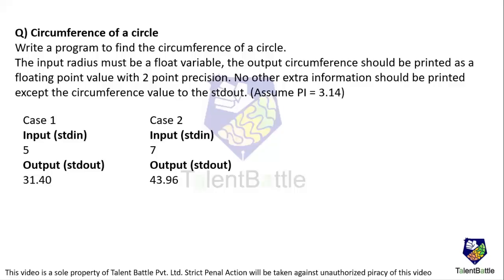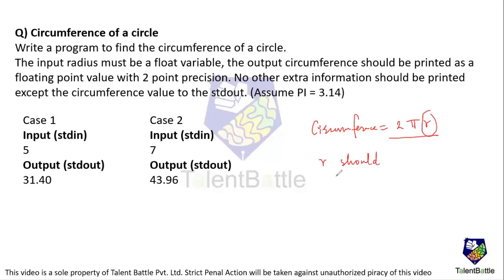The next question is about the circumference of a circle. We need to write a program to find the circumference of a circle. The formula is: circumference = 2 × π × r. One criterion is that the input radius must be a float variable, so the variable r should be of float data type.